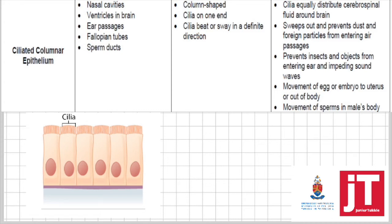Ciliated columnar epithelium — you can see it's columnar epithelium with a basement membrane and nucleus, but it also has cilia, which are hair-like structures on one end that always sway and move in a certain direction. This tissue is found in the nasal cavities, ventricles in the brain, ear passages, fallopian tubes, and sperm ducts. The cilia move and there's your basement membrane and nucleus clearly visible.